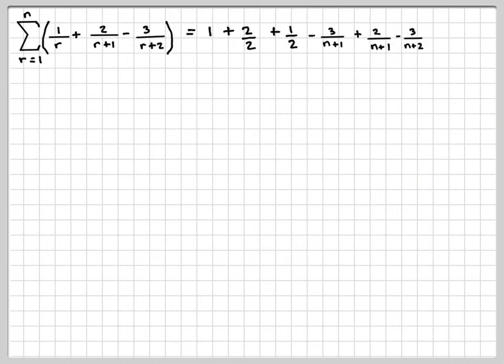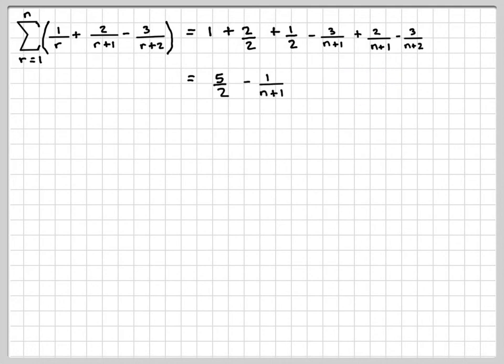So the sum will be 1 + 2/2 + 1/2, which simplifies to 5/2, minus 3/(n+1) + 2/(n+1), giving minus 1/(n+1), then minus 3/(n+2). So this is the sum.